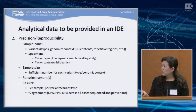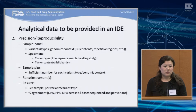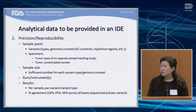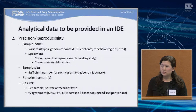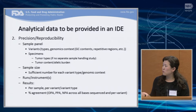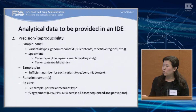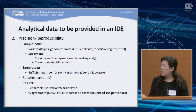Of course, tumor contents and tumor types seem oncology-oriented, but this can be generalized to other applications. If you have questions, you can talk to us through the pre-submission process and we can give comments or suggestions to your questions and proposals. For the precision and reproducibility studies, you want to include different runs or different instruments if applicable, using the same methods to summarize the results.